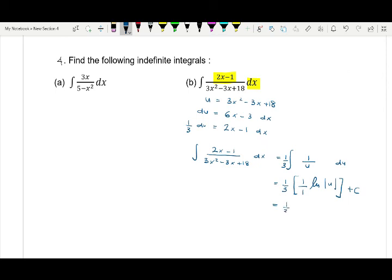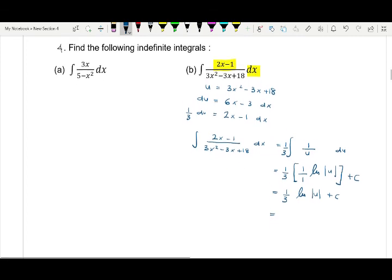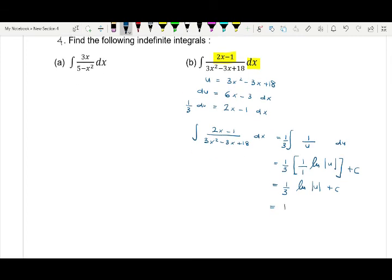So what we have is 1 over 3 ln u plus C. Then substitute again the u, so u is 3x squared minus 3x plus 18 plus C. So this is our final answer.